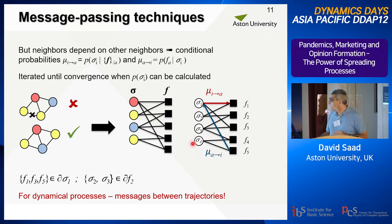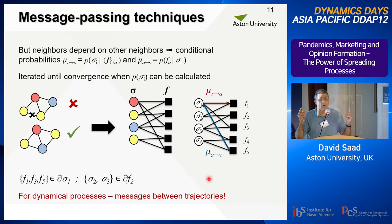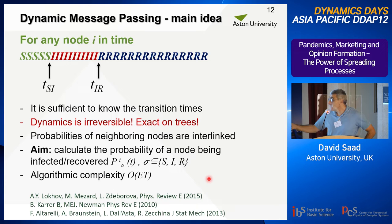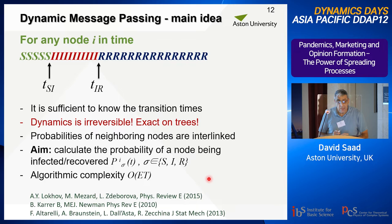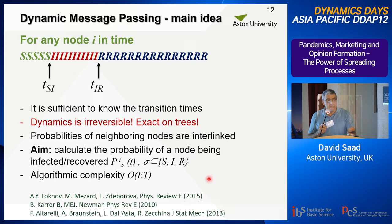In dynamic processes, the whole time window — the whole trajectory — passes messages to the other trajectories, making this more complicated. However, my collaborator André Lokhov and his collaborators came up with quite an interesting idea. Because it's a unidirectional process, the only thing we need to know is the times at which susceptible becomes infected and infected becomes recovered. From that, we can calculate all the probabilities about different trajectories infecting one another. The dynamics is irreversible and exact on trees.